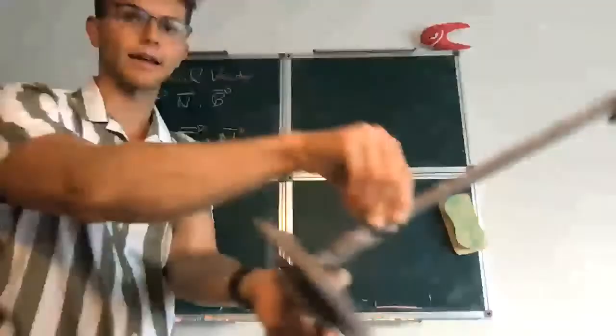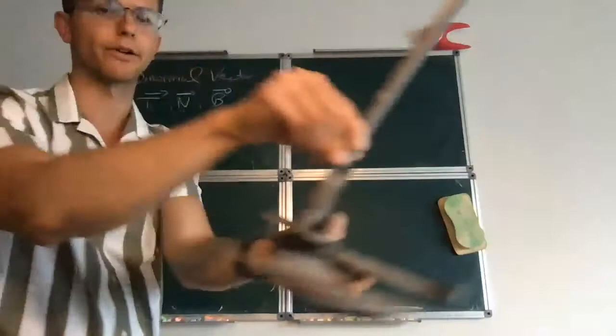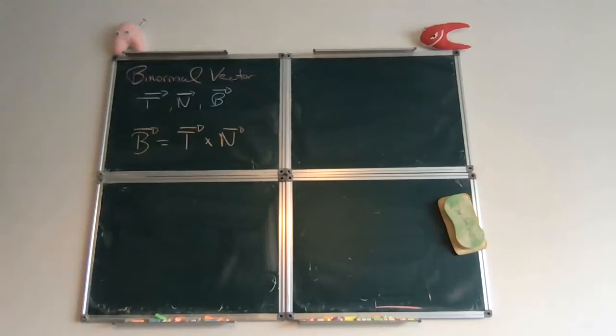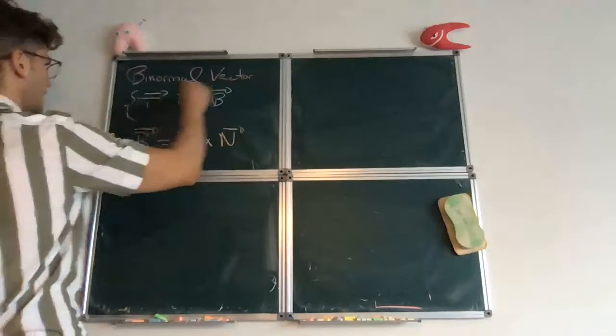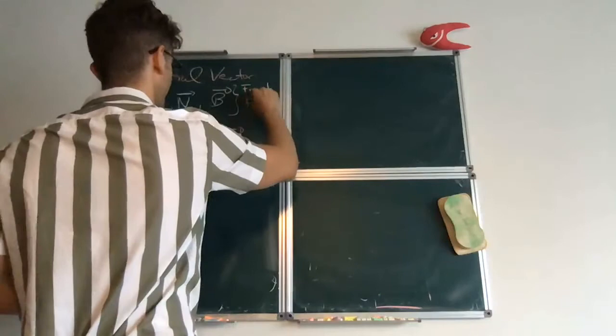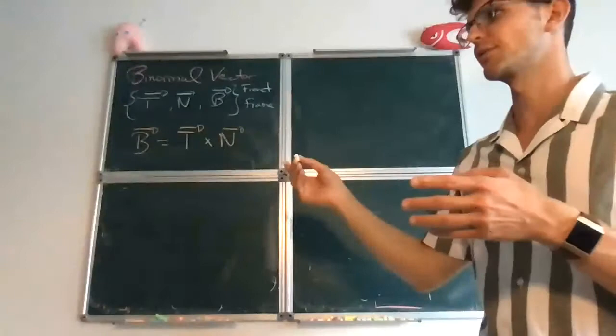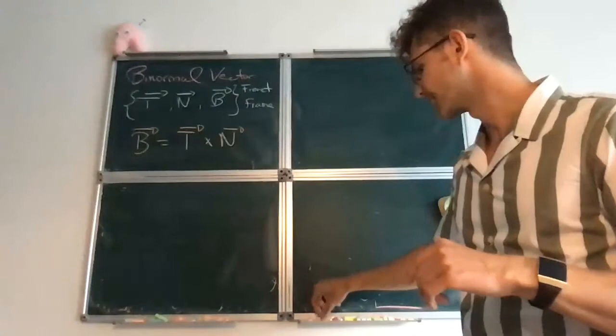Okay, so i, j, and k are fixed in space, but these three can move with the curve. I'll show you a computer animation at the end of the video. And so this is known as a Frenet frame. It can be useful in computer graphics and other things. We're just discussing this to complete the story.